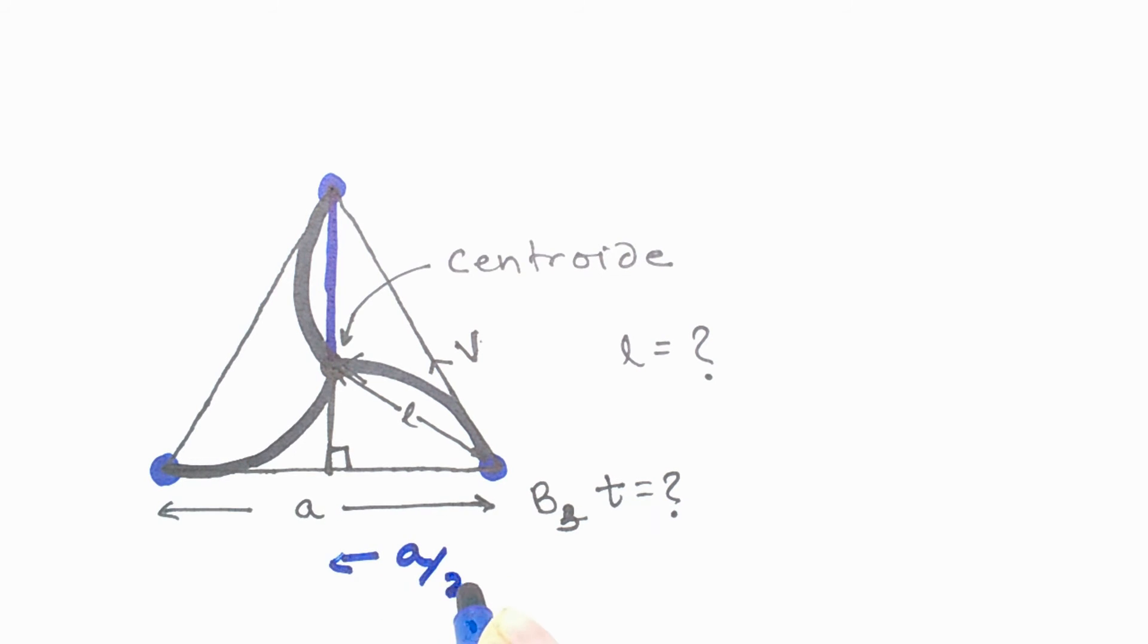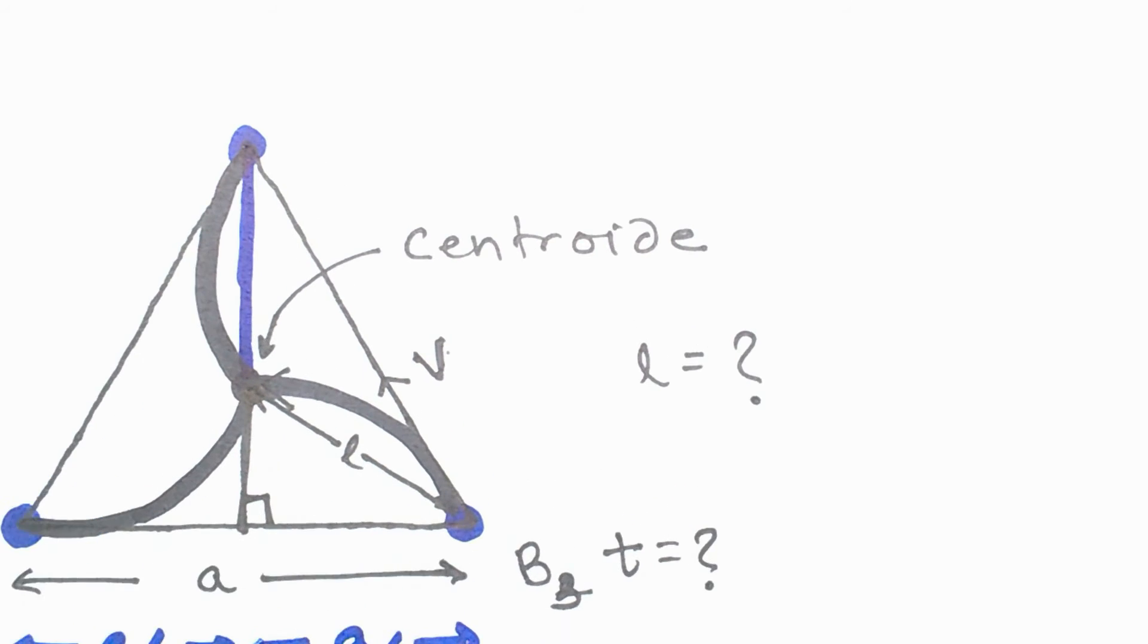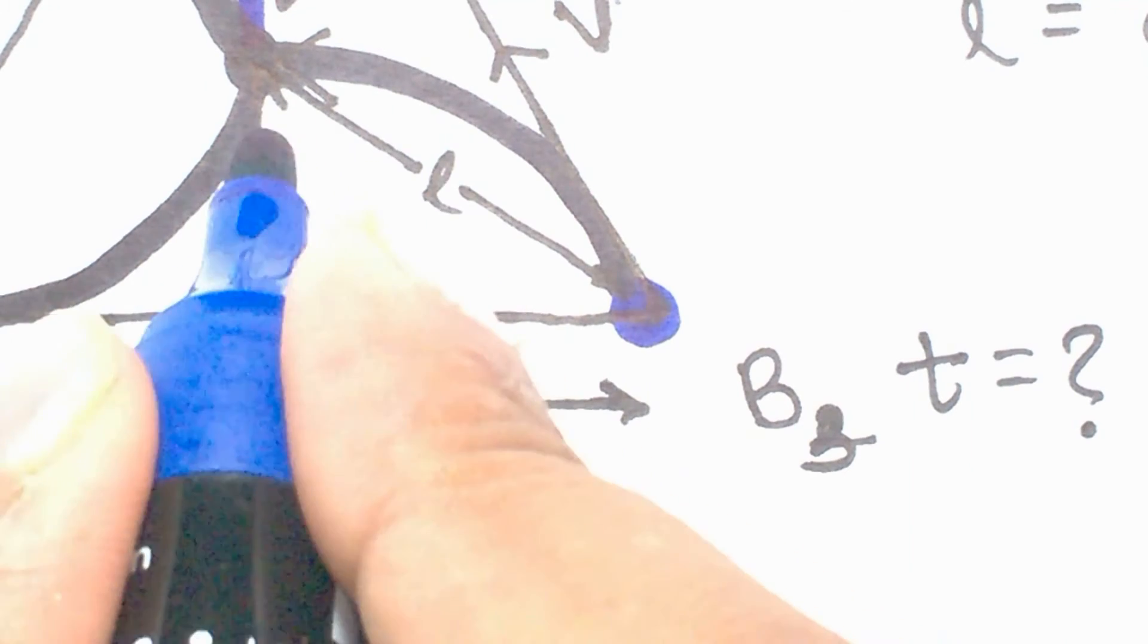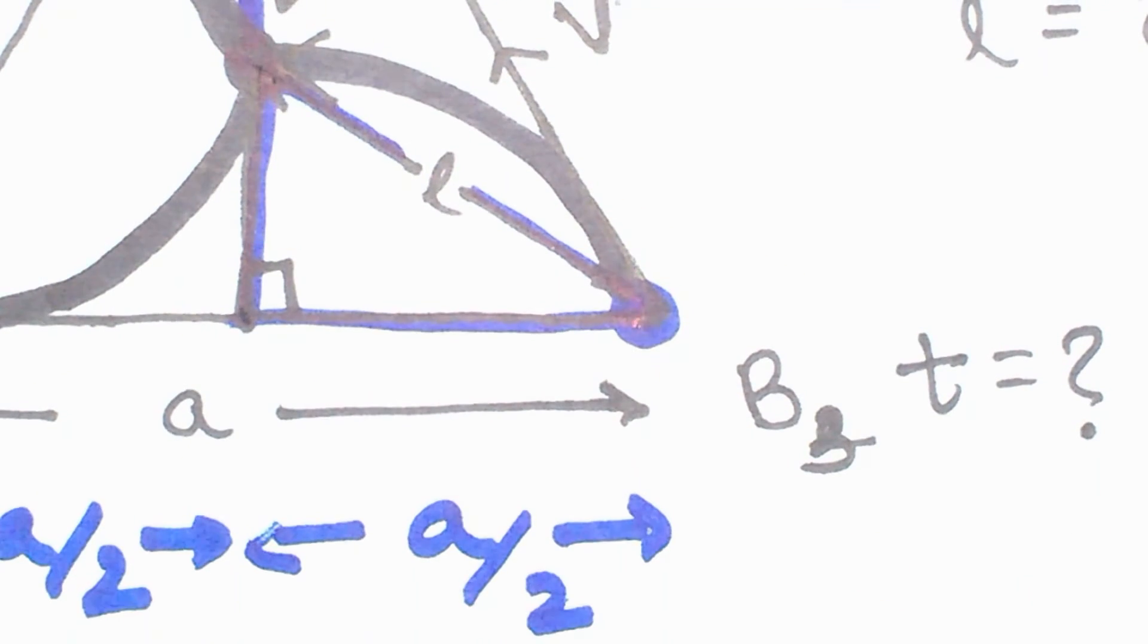And this line will divide the base of this triangle into two equal parts. So now we have a right angle triangle with a base length which is equal to half of the side of the triangle.